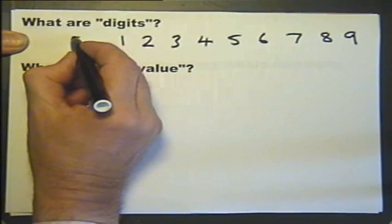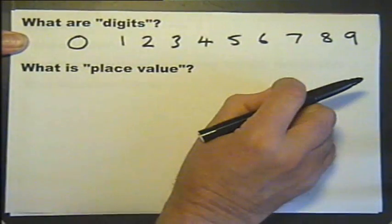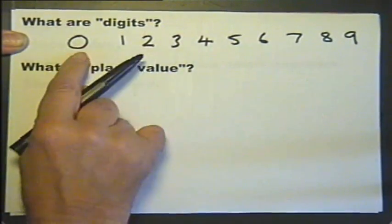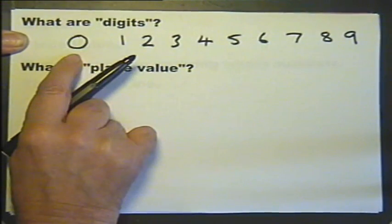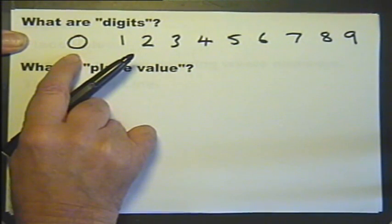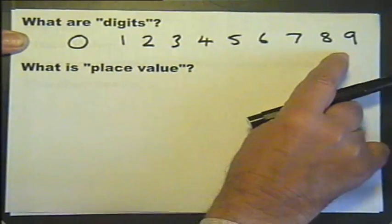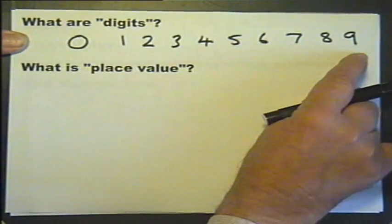And we also include zero or nought, although some people argue about whether nought is a digit, but we need to include that to be able to make our numbers up. These are the digits, and from these digits we can make numbers.